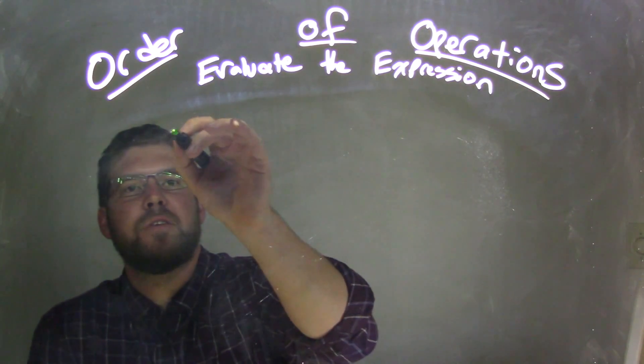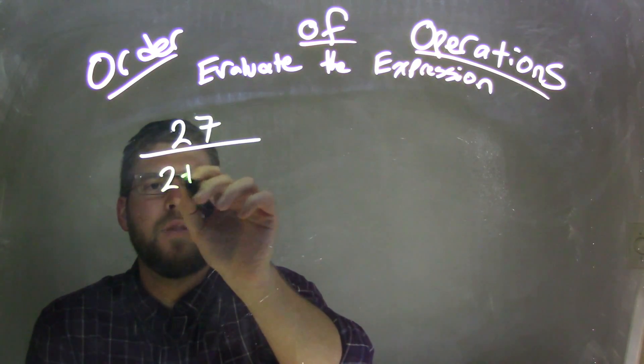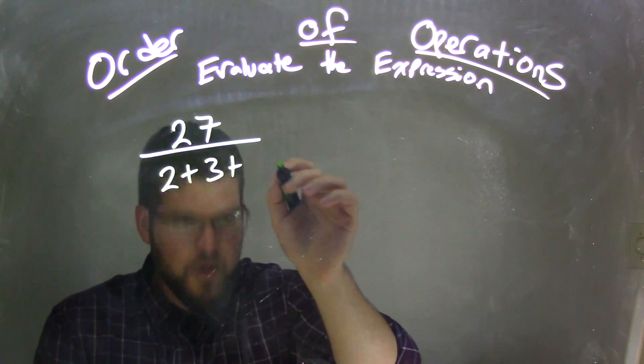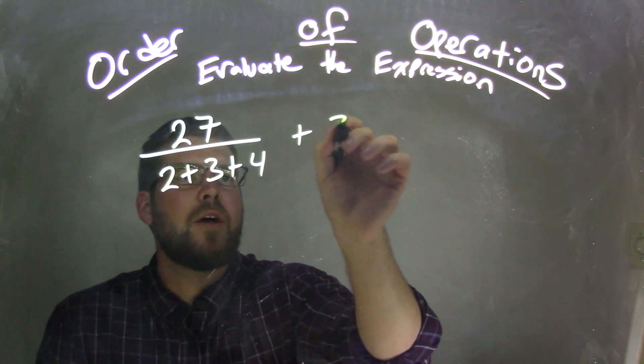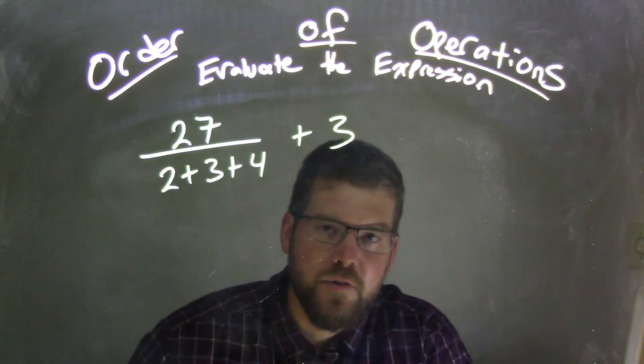So if I was given this expression, 27 over 2 plus 3 plus 4, all plus 3. So 27 over 2 plus 3 plus 4 plus 3.